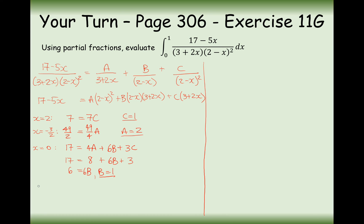So instead of integrating 17 minus 5x over the big fraction, we're going to integrate 2 over (3 plus 2x) — since A was 2 — plus 1 over (2 minus x) — since B was 1 — plus 1 over (2 minus x) squared — since C was 1 — all dx.